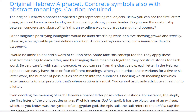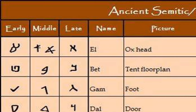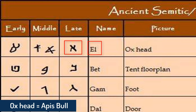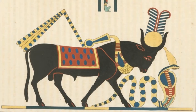That's where caution is a must. You cannot arbitrarily attribute a meaning to a letter. Even deciding the meaning of each Hebrew alphabet letter poses other questions. For instance, the Aleph, the first letter of the alphabet, designates El, which means God, or god with a small g. It has the pictogram of an ox head, which, as you know, was the symbol of an Egyptian god, the Apis bull.